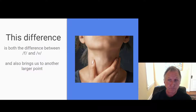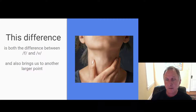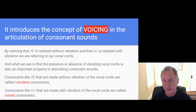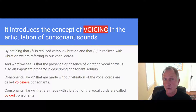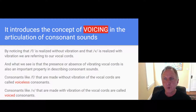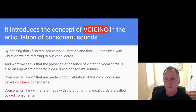This difference is the key to understanding the difference between F and V, and it introduces the concept of voicing in the articulation of consonant sounds. F is realized without vibration and V is realized with vibration — specifically, vibration of the vocal cords. The presence or absence of vibrating vocal cords during the production of a consonant is an important property. Consonants like F are made without vibration and we call them voiceless consonants; consonants like V are made with vibration and we call them voiced consonants.